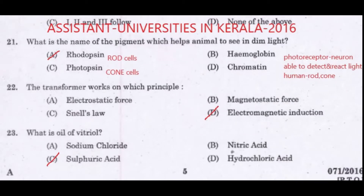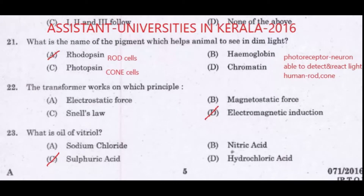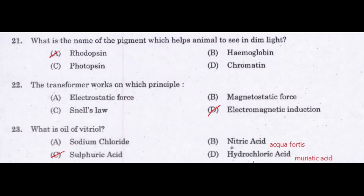Sulfuric acid is known as the king of chemicals. Nitric acid is also called aqua fortis, which is another name to remember. Hydrochloric acid is also called muriatic acid.